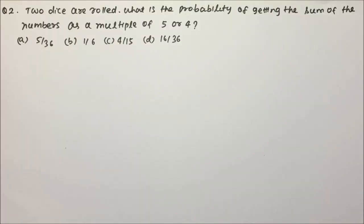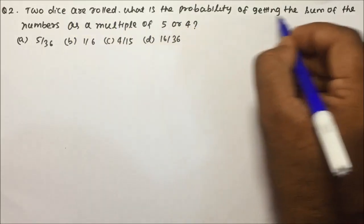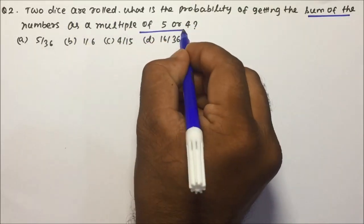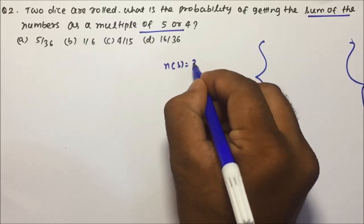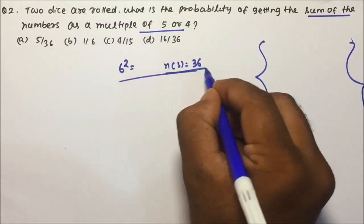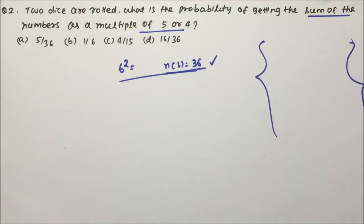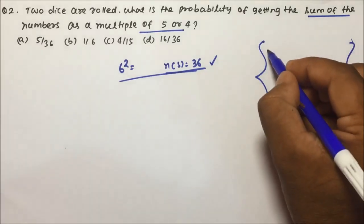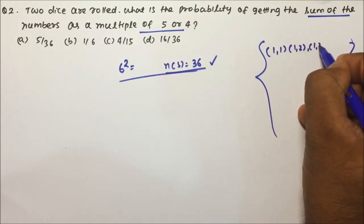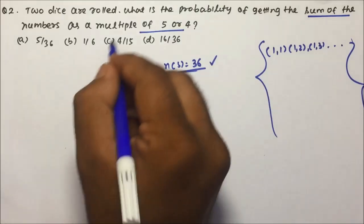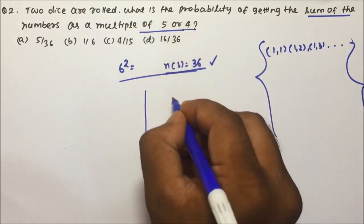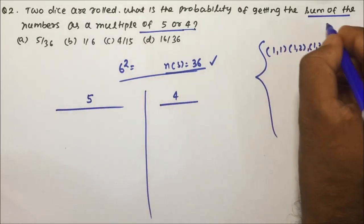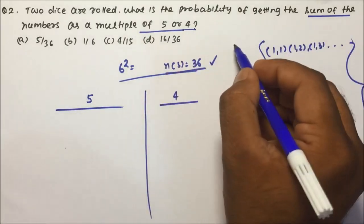Now moving towards the next question — question number 2: two dice are rolled; what is the probability of getting the sum of numbers as a multiple of 5 or 4? When you roll 2 dice, the total outcomes will be 36 — this I have explained in the previous video, so you can watch that to understand the concept in detail. Now directly we will try to solve: sum of the numbers as a multiple of 5 or 4.